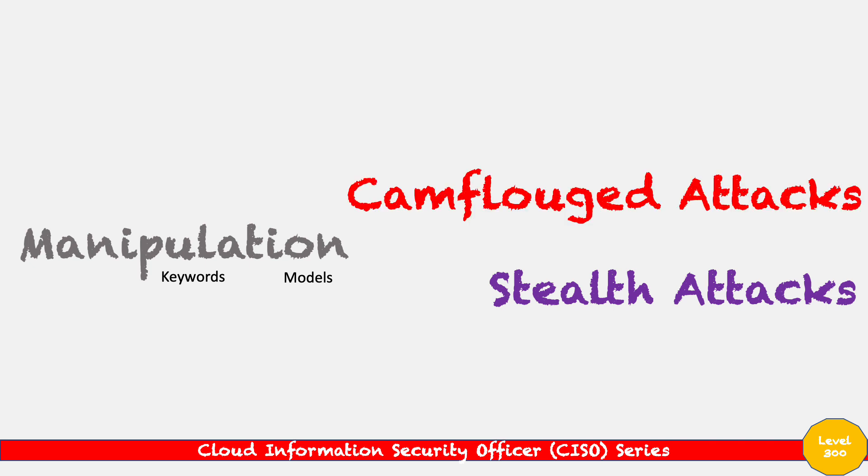You can also camouflage the attacks. If we're accessing these models through APIs, we make requests sound genuine, but they can be camouflaged with an attack inside them. That's another way we can poison LLMs.